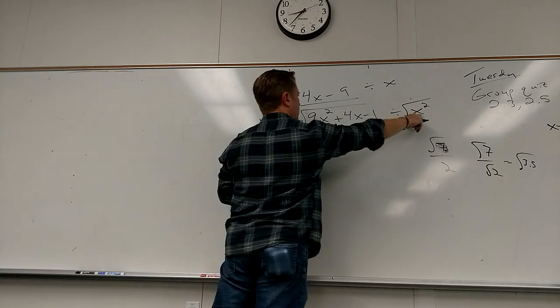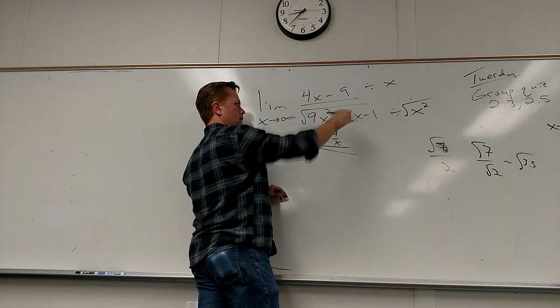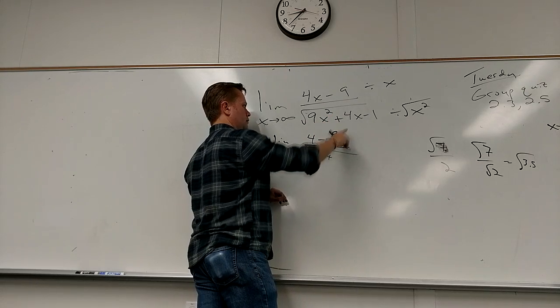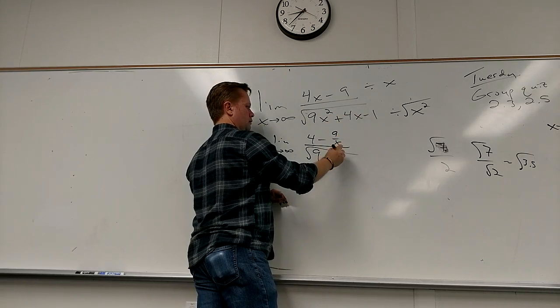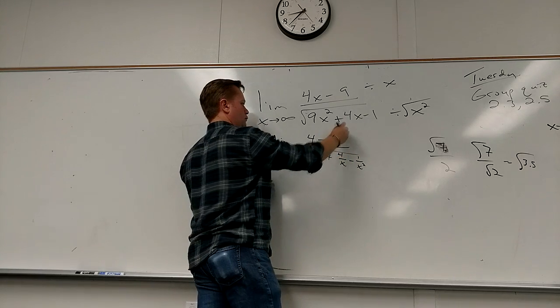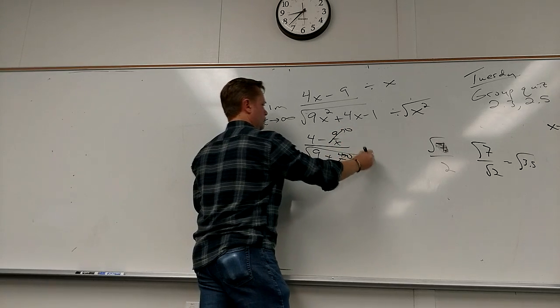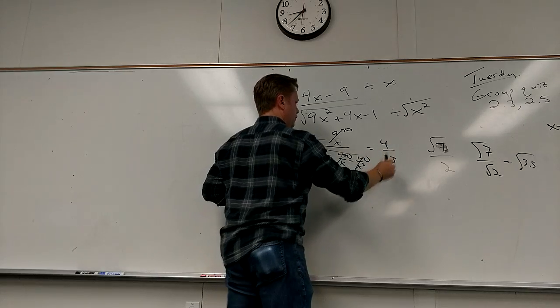And on the bottom now, I can bring that x squared in because they both have a square root. So what do I get on the bottom? Nine. Nine. Four over x. So what does all this stuff go to? Zero. So what do I end up with? Four over the square root of nine.